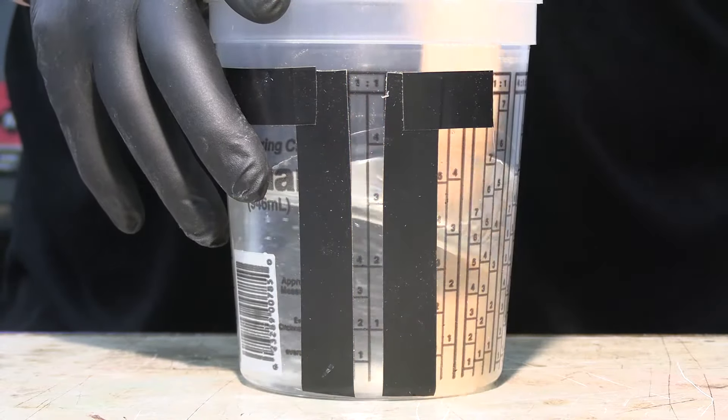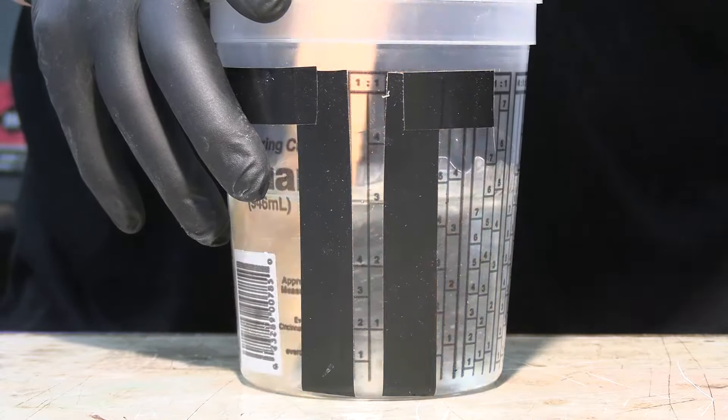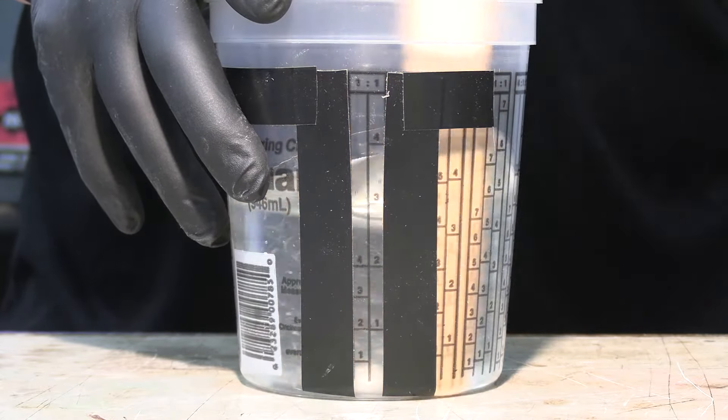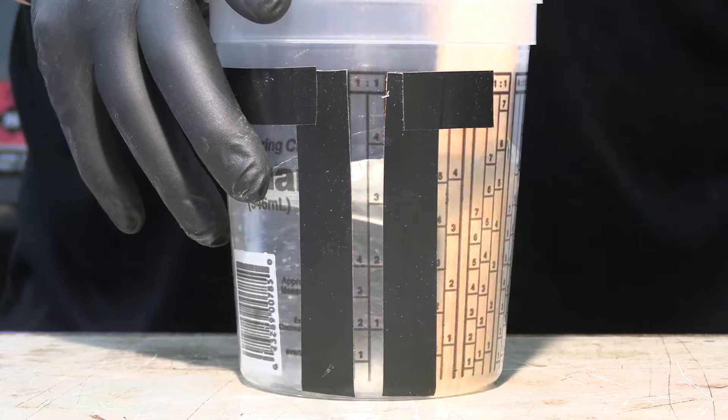Mixing time is three to three and a half minutes slow in one direction, trying to prevent air bubbles while mixing. It's best to have a torch on hand or a heat gun to pop any bubbles that may come to the surface.